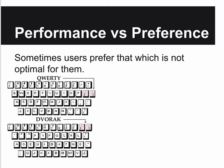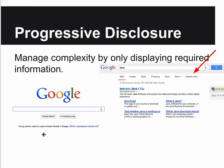Performance versus preference: sometimes users prefer that which is not optimal for them. Many times in applications, people have gotten used to something - like QWERTY over Dvorak - and even though Dvorak might be better, switching would take a lot of time and training. This is very important when designing software for enterprises that have been using certain software for a long time. People in that office have gotten used to doing things a certain way and really won't change dramatically, so don't try to make them change.